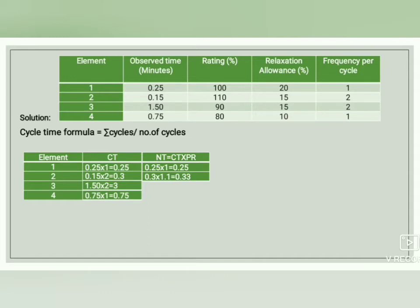For the third element, cycle time is 3 and performance rating is 90% (0.9), so normal time = 3 × 0.9 = 2.7. For the fourth element, cycle time is 0.75 and performance rating is 80% (0.8), so normal time = 0.75 × 0.8 = 0.6.